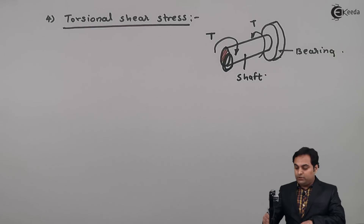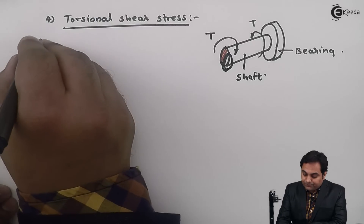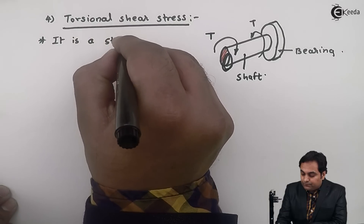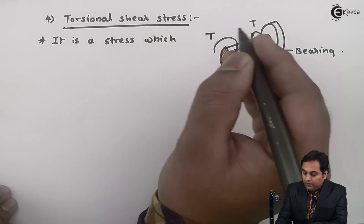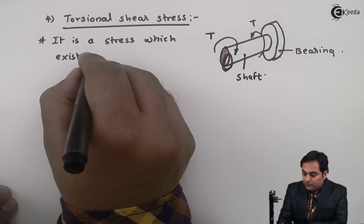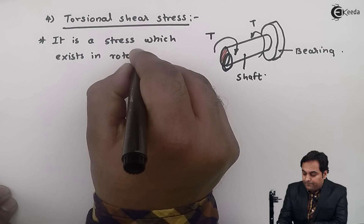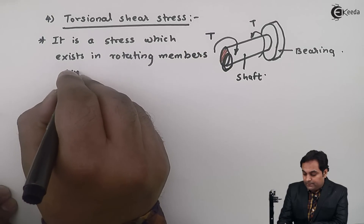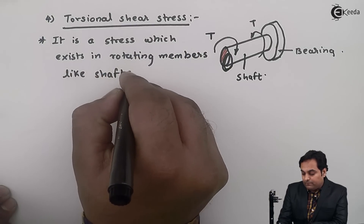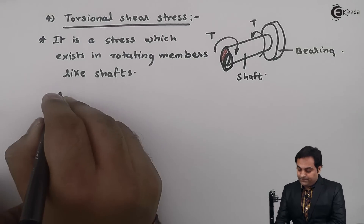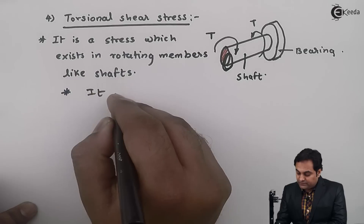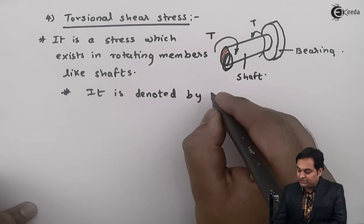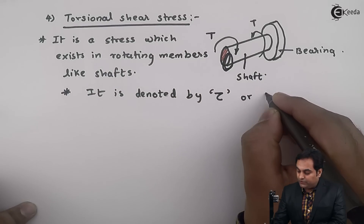Torsional shear stress is the stress which exists in rotating members like shafts. Since it is a type of shear stress, it is denoted by tau or f_s.